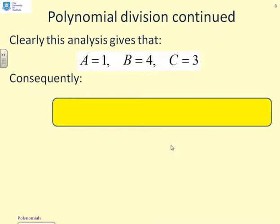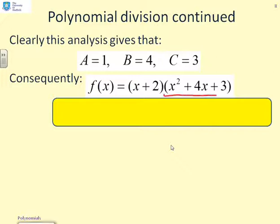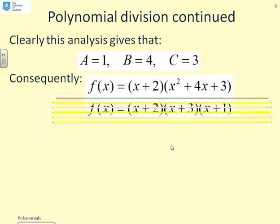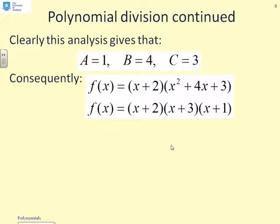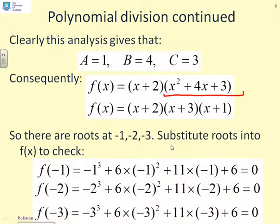Right, so what we've got there, a = 1, b = 4, c = 3. And therefore, my polynomial becomes f(x) = (x+2)(x² + 4x + 3). Having got to this point, I can now use my by-inspection rules to factorize the remaining quadratic of x² + 4x + 3. And I can write down that I've got (x+2)(x+3)(x+1). So, the roots are at -1, -2, and -3.